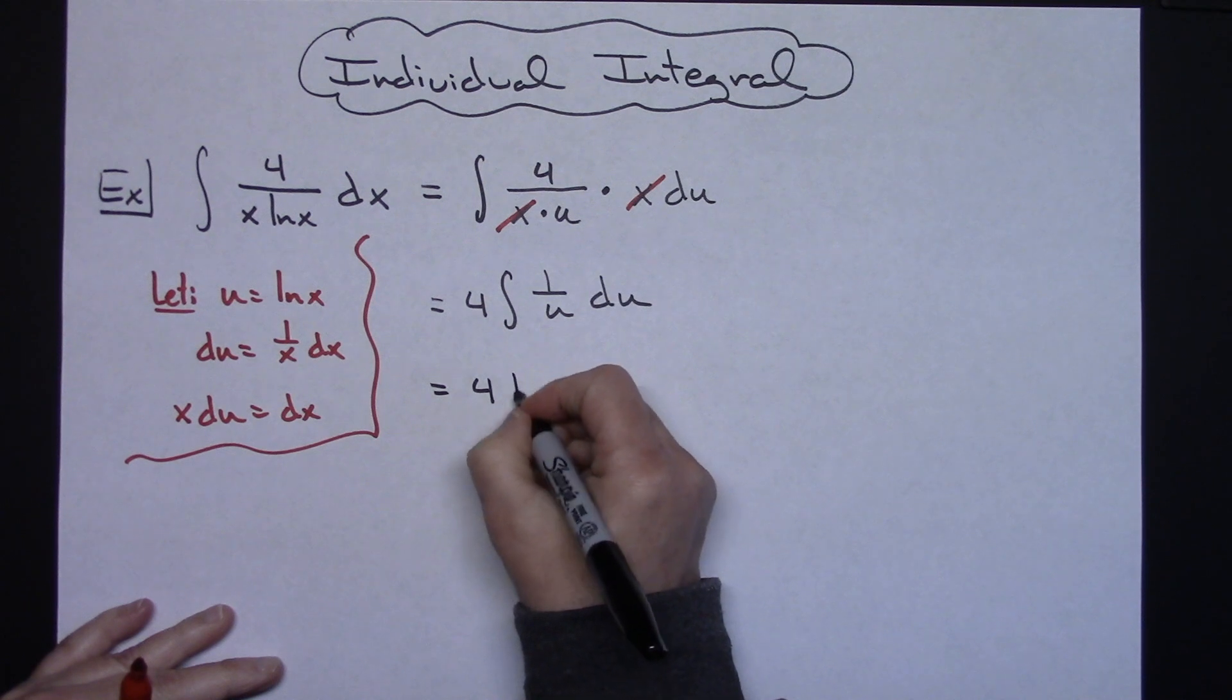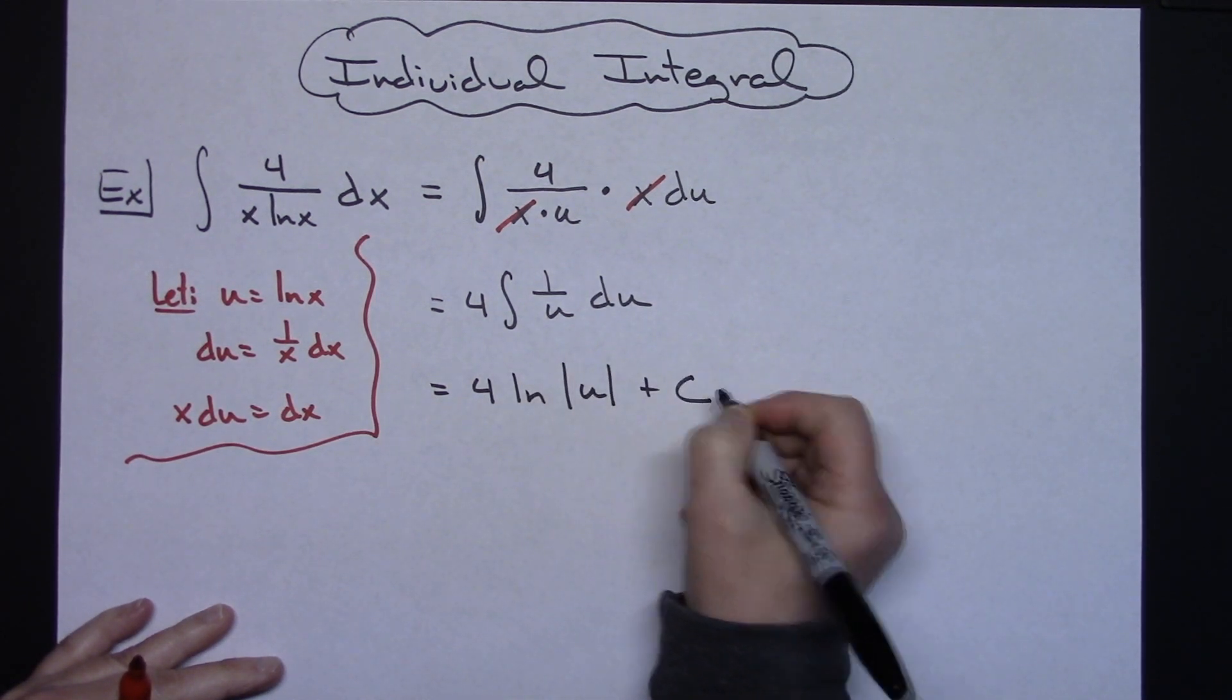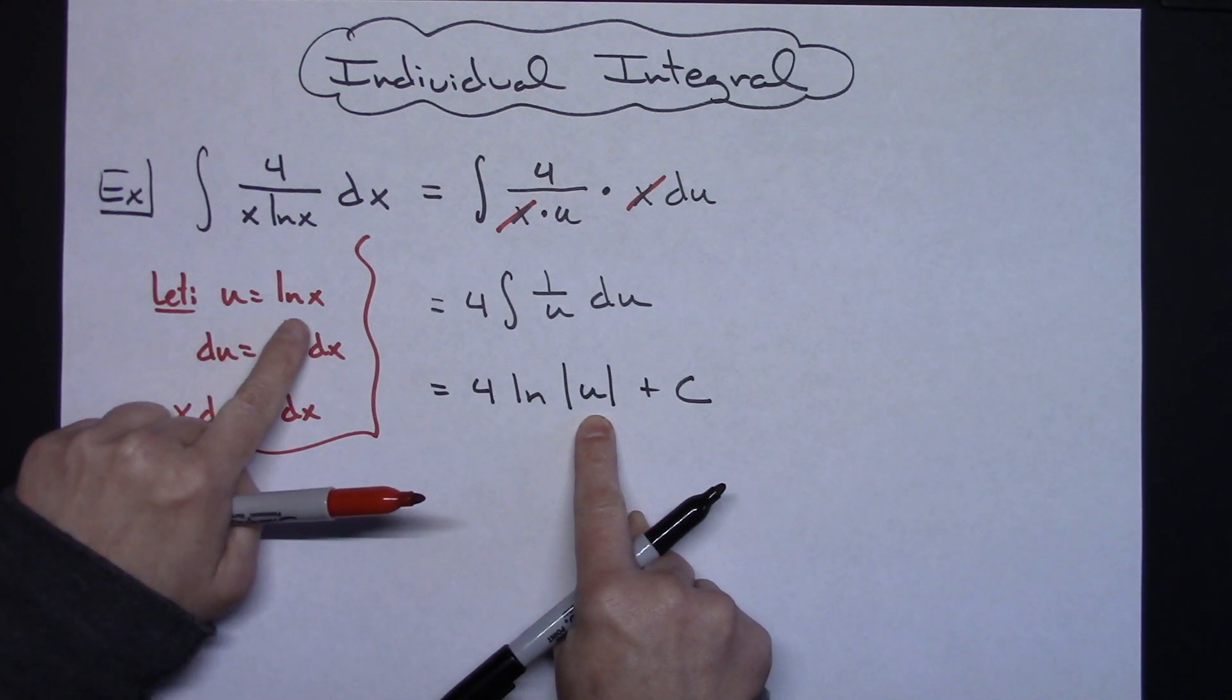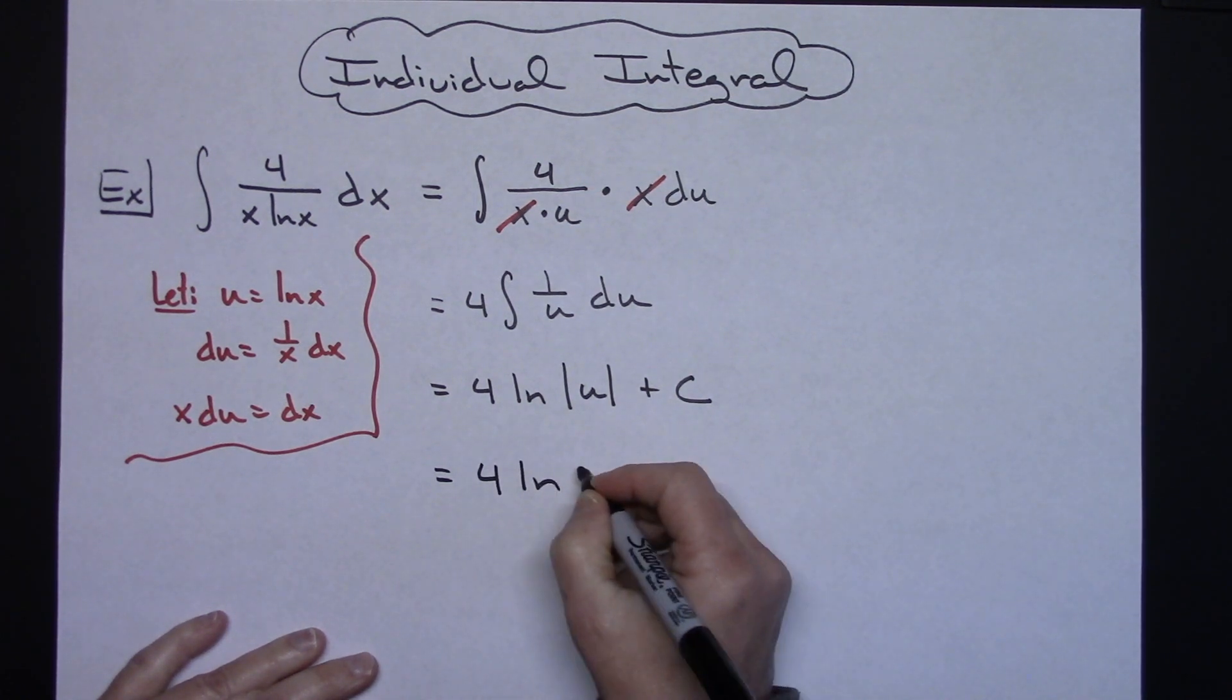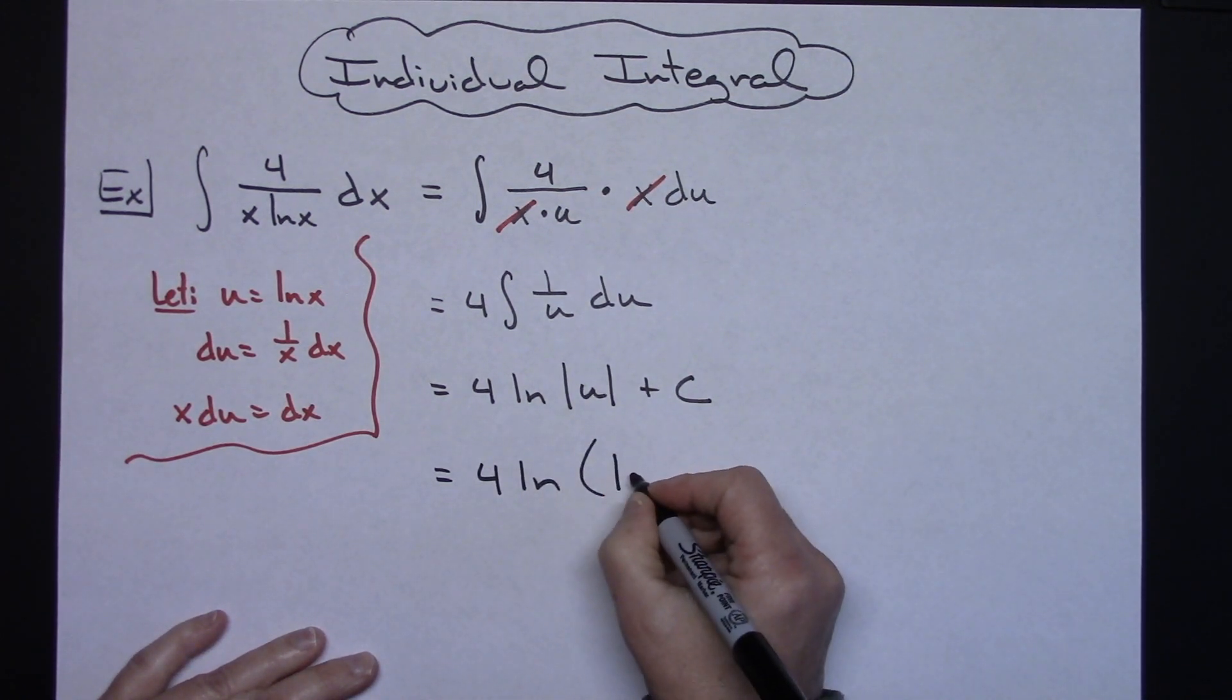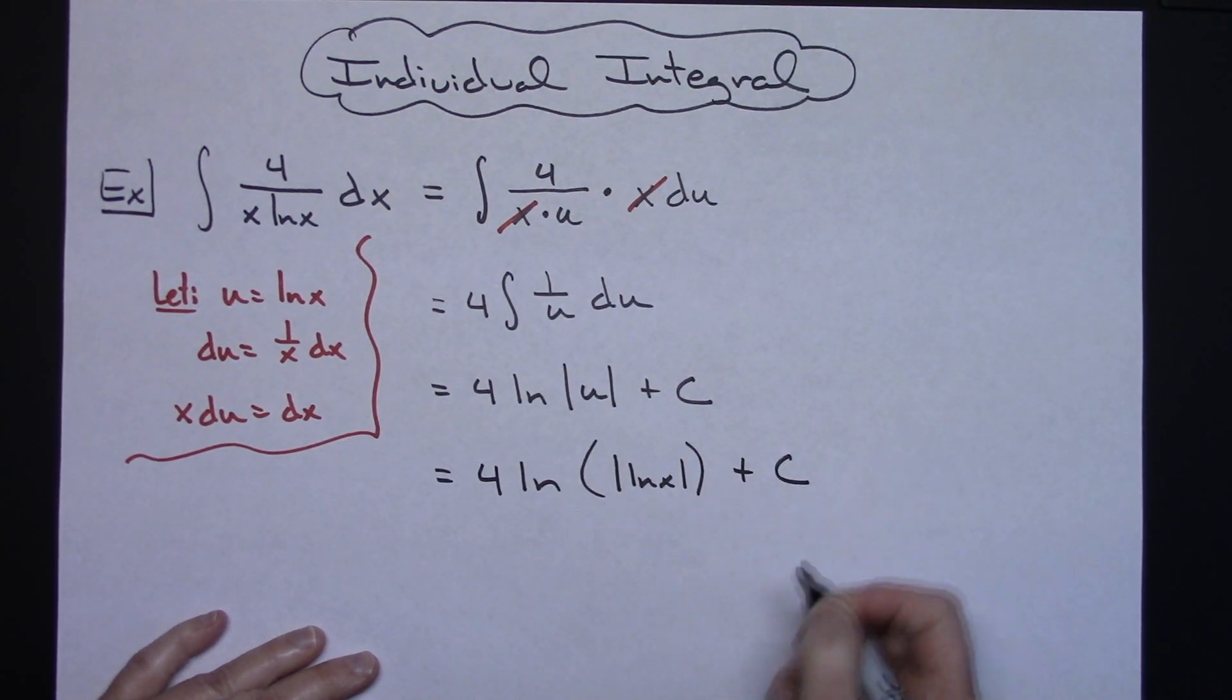So we'll have 4 natural log absolute value of u plus c, and then I can replace u with what it equals: natural log of x. So I will have 4 natural log of the absolute value natural log of x plus c.